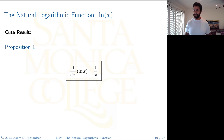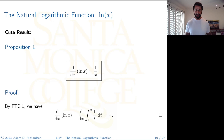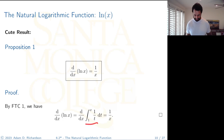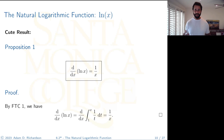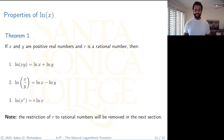Next cute result: the derivative of the natural log function is 1/x. By the Fundamental Theorem of Calculus Part 1, differentiating ln(x) — which is defined as that integral — gives us the inside function evaluated at the upper bound. In particular, we get 1/x. So the derivative of ln(x) is 1/x.